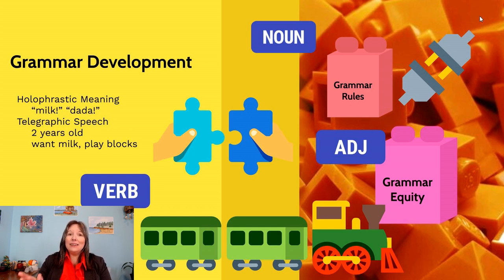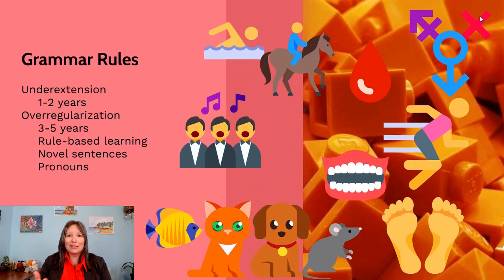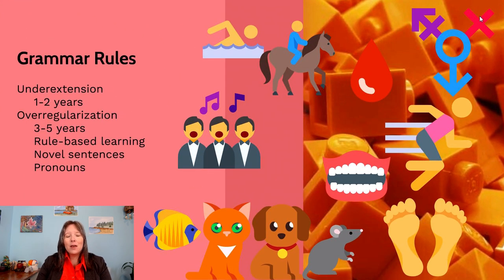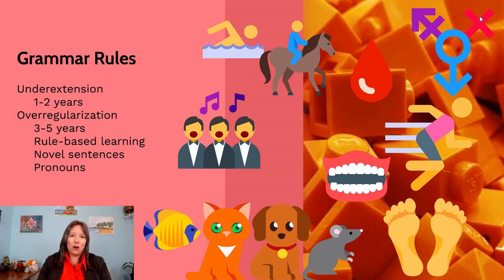Grammar is tricky, and we make a lot of mistakes learning it. One of the big mistakes around ages one, two, or even three is under-extension — the idea that if a child sees one dog and learns to call it 'doggy,' they might think that's the only doggy in the world.